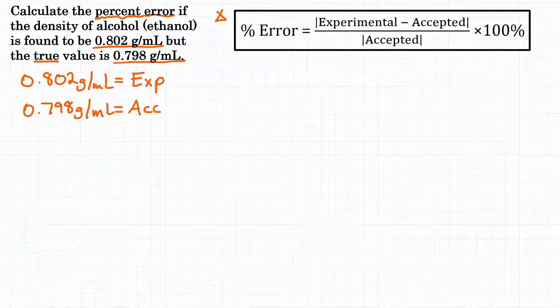In the top right we have our percent error equation. So let's write that down here. Percent error is equal to a fraction and on top of that fraction we have in absolute value bars the experimental value minus the accepted. Make sure you put those bars there.